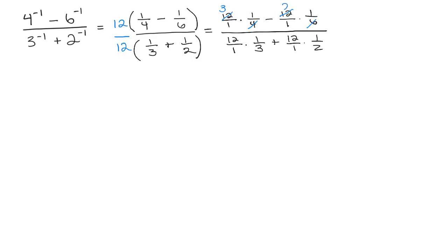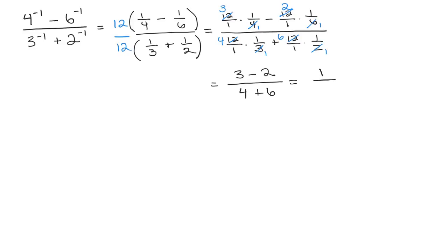Six goes into twelve twice, three goes into twelve four times, and two goes into twelve six times. The denominators all cancel to one. So in the numerator I have three times one is three, minus two times one is two. In the denominator, four times one is four, plus six times one is six. Simplifying: three minus two is one, and four plus six is ten. So the answer is one-tenth.